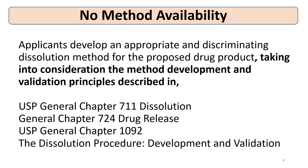If there is no Dissolution Method available in the monograph, no monograph exists, or no method is available in the OGD, then the applicant is required to develop an appropriate and discriminatory Dissolution Method for the proposed drug product. This must take into consideration the method development and validation principles described in USP General Chapter 711 for Dissolution, USP General Chapter 724 for Drug Release, and USP General Chapter 1092 for Dissolution Procedure Development and Validation. All these USP chapters are required to be referred to, and on the basis of their principles, the Dissolution Method must be developed.